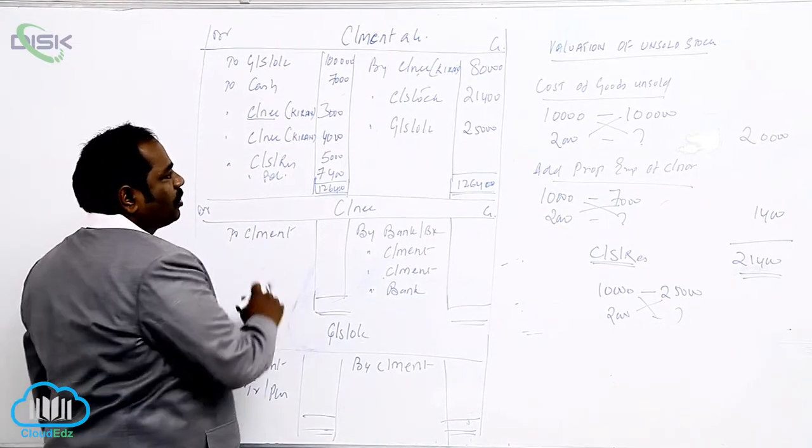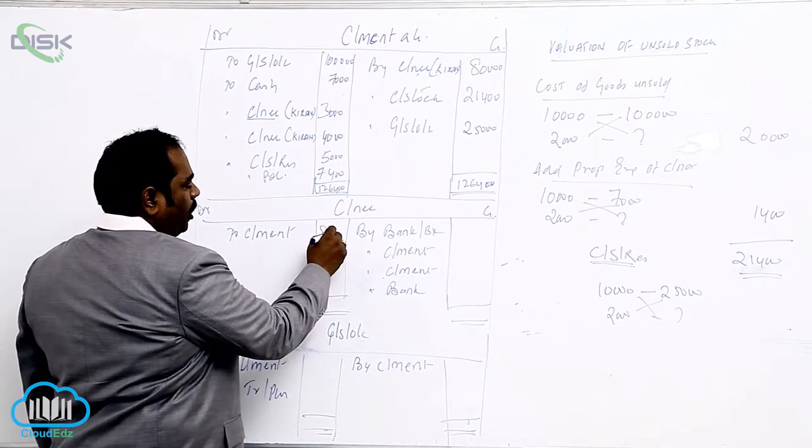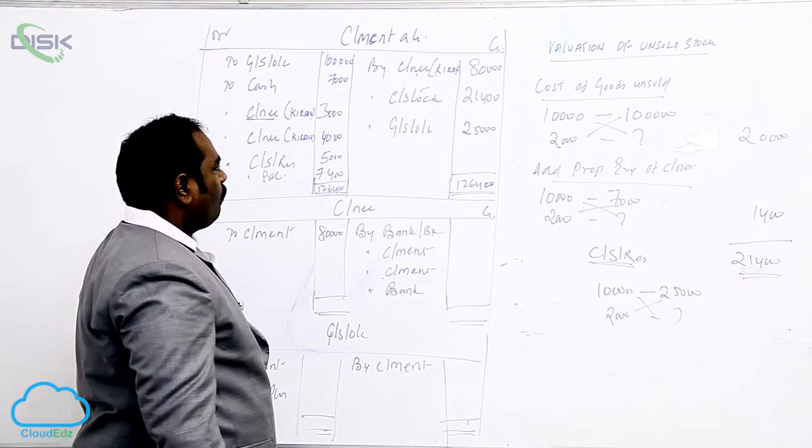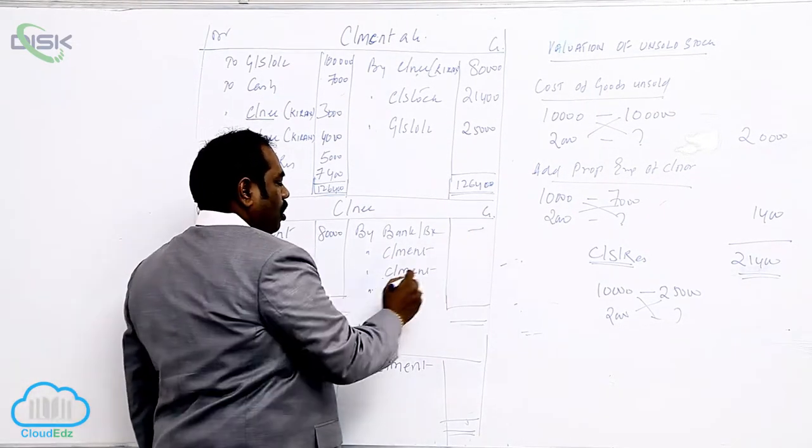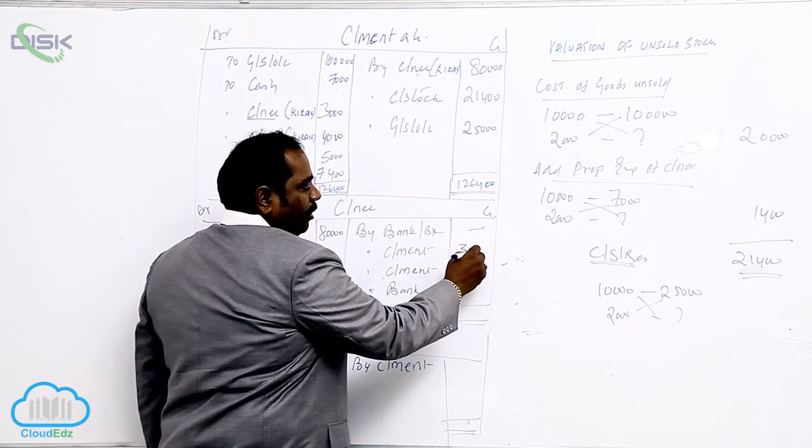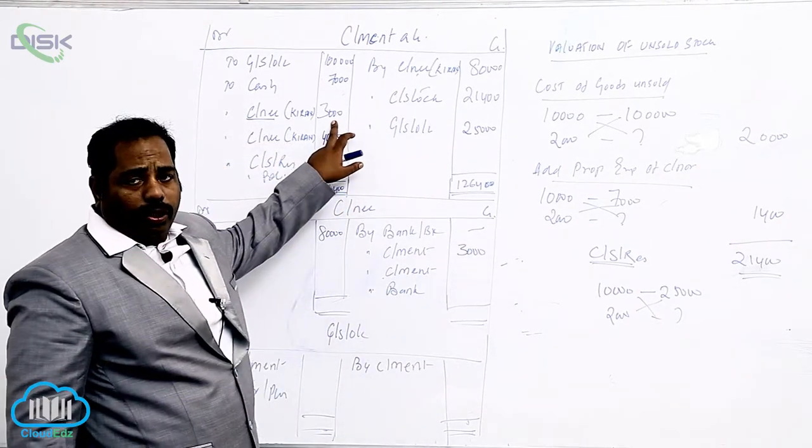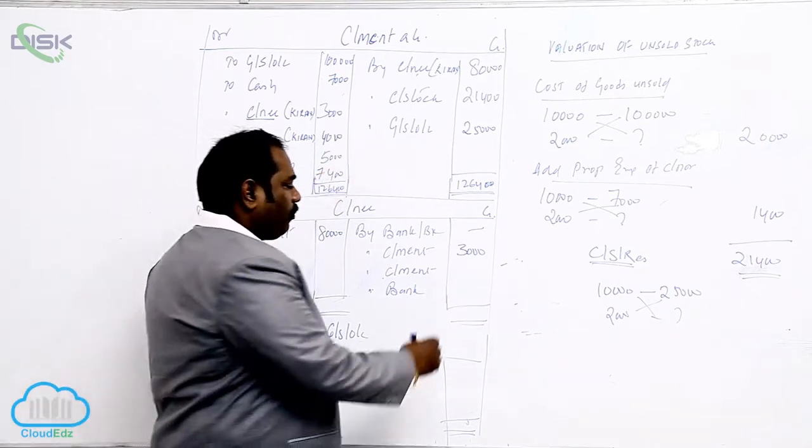Next, consignment is for sales. What is the total sales made by the consignee? 80,000. Did we get any advance? No. Buy consignment is for expenses. The expenses made by consignee is 3,000 and commission payable is 4,000.